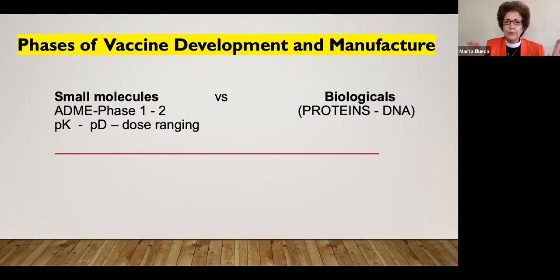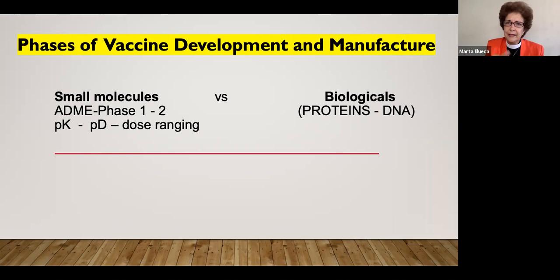In pharmaceutical development there are two main groups of molecules or substances that get studied and eventually approved for use in human beings. Small molecules, which are the pills, the elixirs, or antibiotics for example — those go through the same phases that a vaccine goes, except that a vaccine is not a small molecule because it's a large protein.